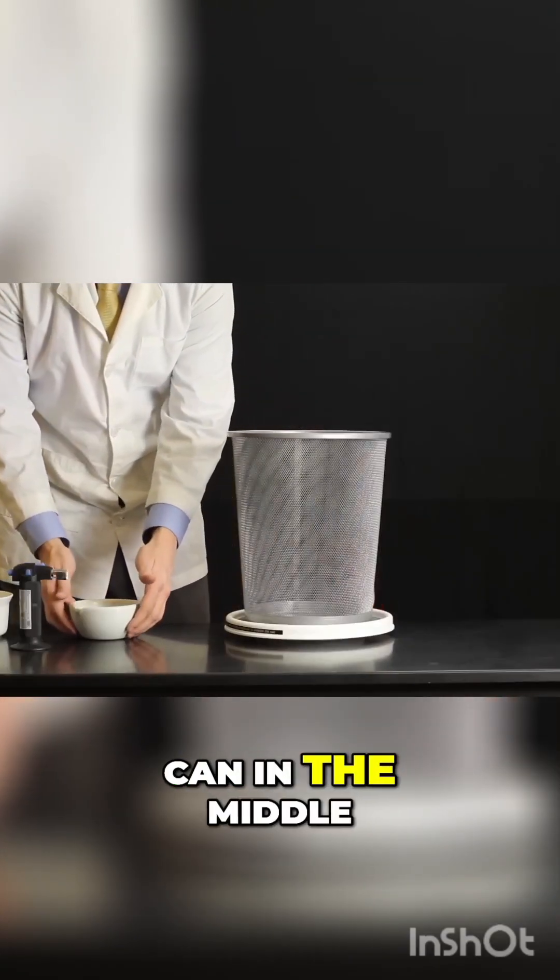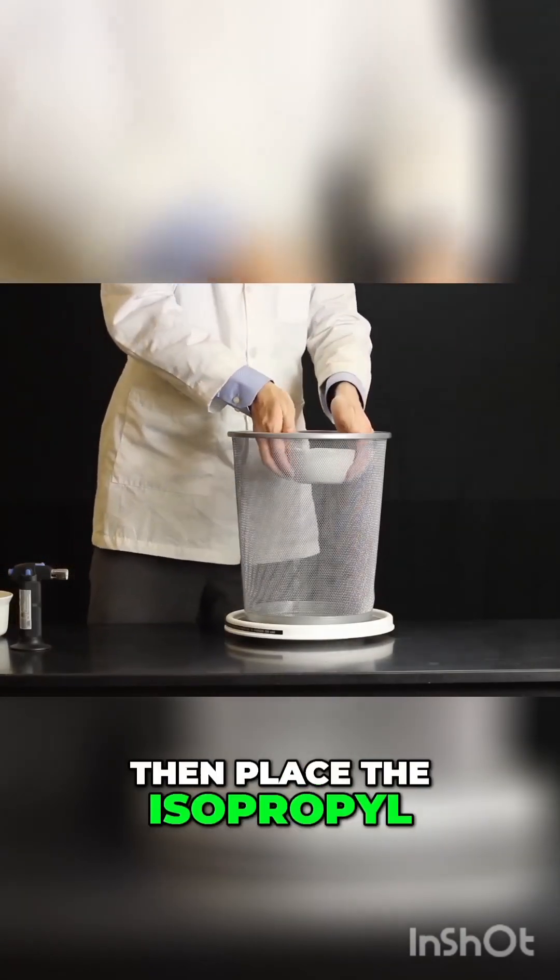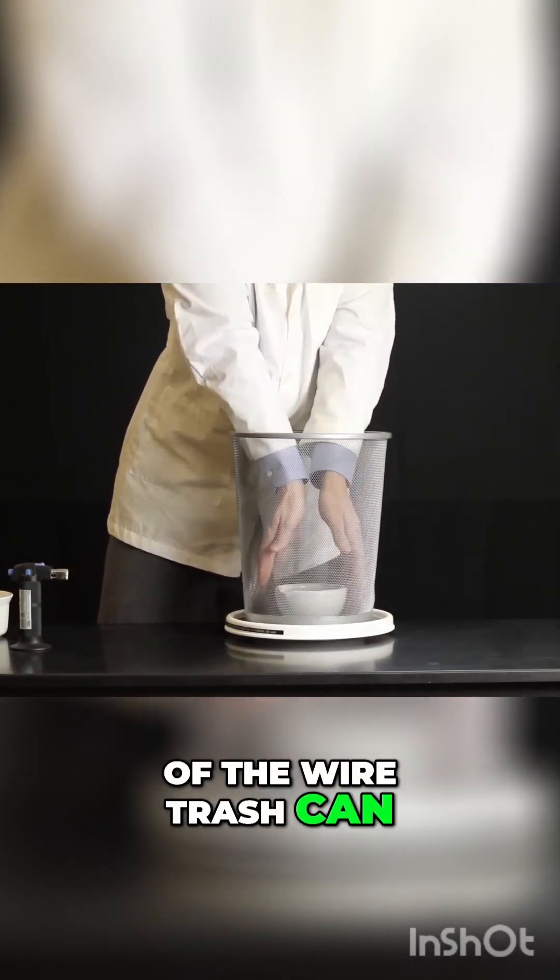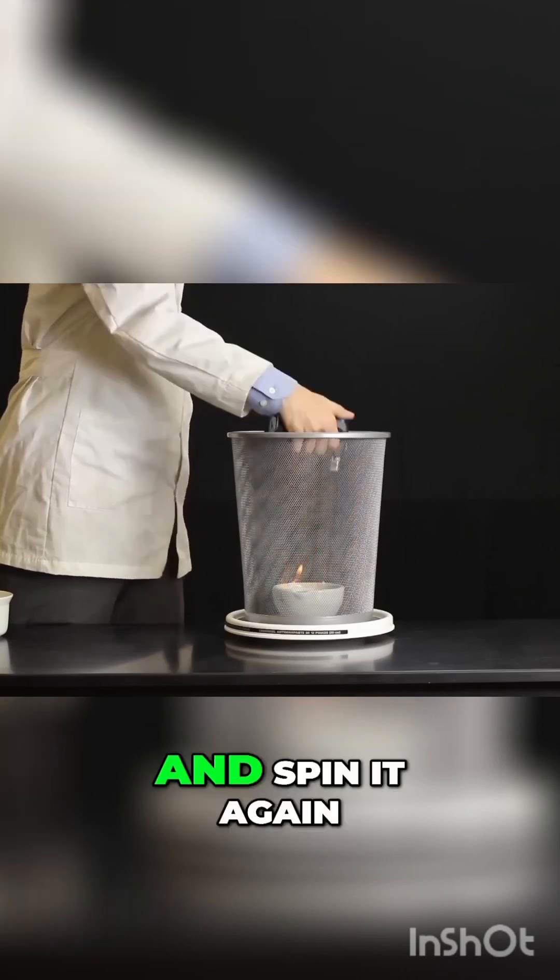Next, place a wire trashcan in the middle of the Lazy Susan. Then place the isopropyl alcohol in the middle of the wire trashcan. Light the isopropyl alcohol and spin it again.